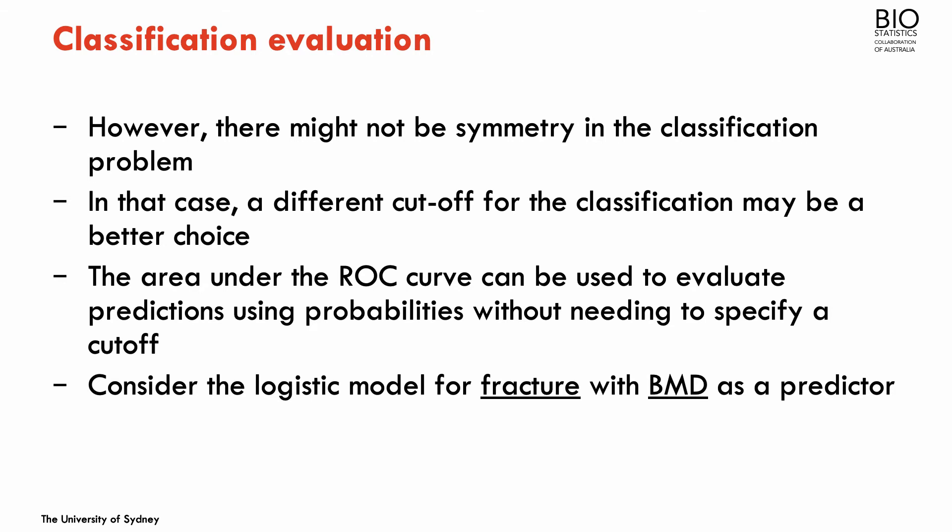However, the base classifier assumes symmetry in misclassification — that misclassifying a positive case is as bad as misclassifying a negative case. We could argue that in some situations it's more important to correctly classify all positive cases, so we could use a different cut-off for classification instead of 0.5. Another approach is to evaluate the model across the full range of possible cut-offs rather than focusing only on 50%.